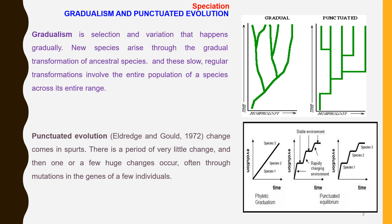Phyletic gradualism is a slow and gradual process where new species arise from their ancestral forms. The transformation is slow and the selection and variations occurring are hardly noticeable over a short period of time. The figurative representation of gradualism is presented on your right.